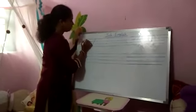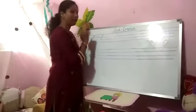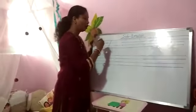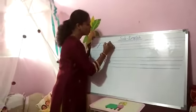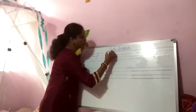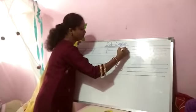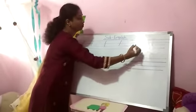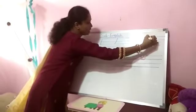Come on, see. This is called slanting line. Top to bottom — this is called slanting line. Once again, this is called slanting line.